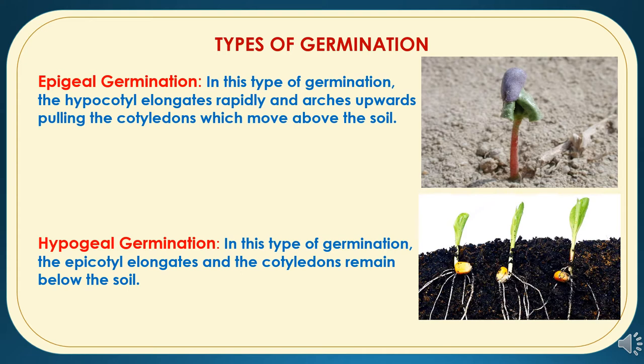There are two types of germination. The first is epigeal germination, where the hypocotyl elongates rapidly and arches upward, pulling the cotyledon outside, which moves above the soil. For example, in cotton seeds, epigeal germination is recorded where the cotyledon comes outside from the soil. The second is hypogeal germination, where the epicotyl elongates and the cotyledon remains below the soil, as in corn germination.